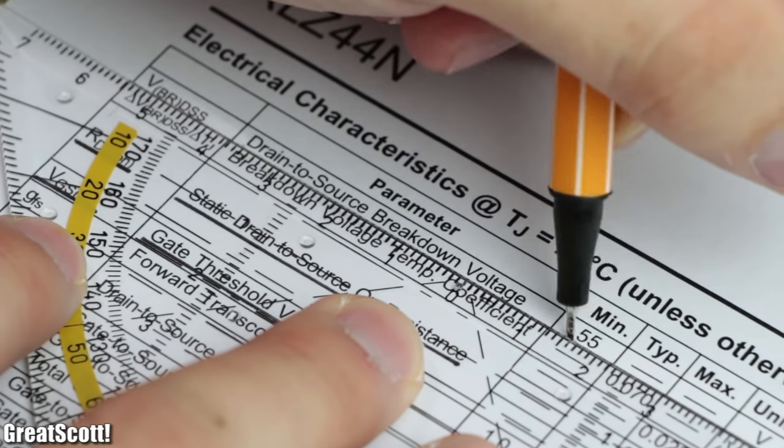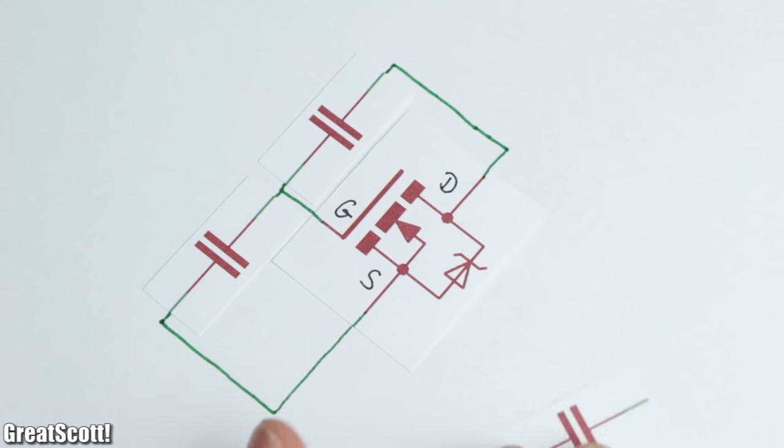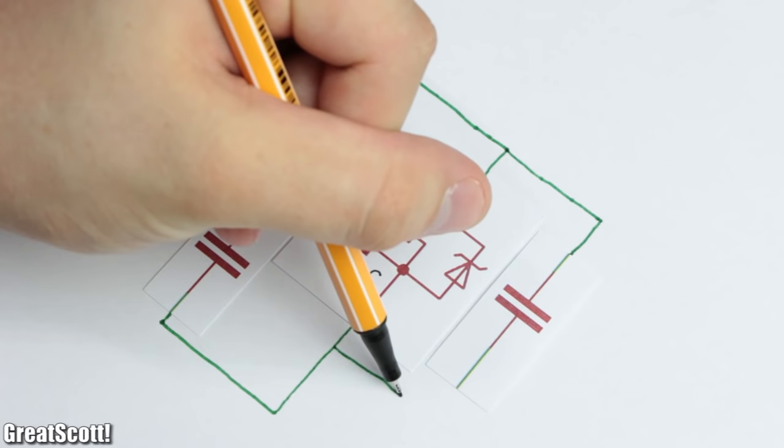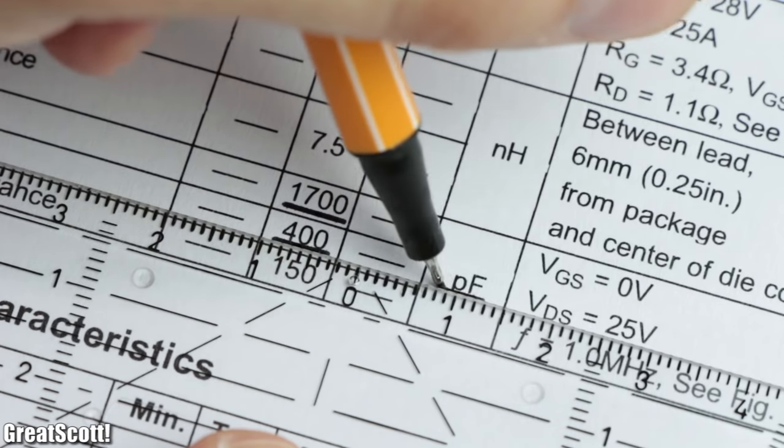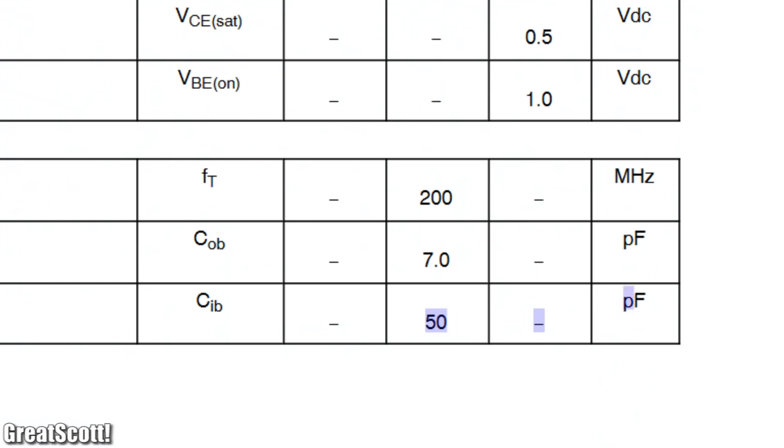A part of the reason for this oscillation are the parasitic capacitances between the terminals of the MOSFET, which are much bigger than those of a BJT.